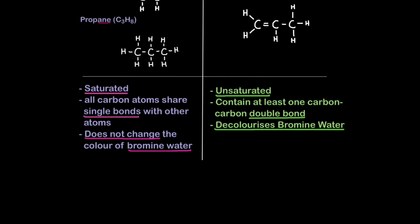Saturated means all carbon atoms share single bonds with other atoms. Unsaturated means the molecule contains at least one carbon-carbon double bond between the carbon atoms, never between the hydrogen atoms. Alkanes do not change the color of bromine water. This is a way we can test for alkanes and alkenes. Bromine is a browny, orangey color. Whereas alkenes will decolorize bromine water. This chemical test comes up a lot in exams, so remember this.